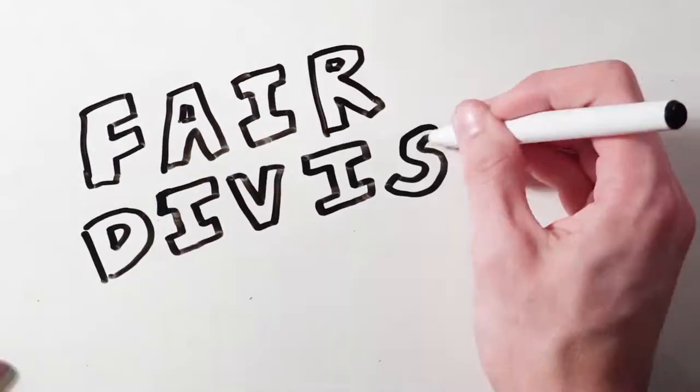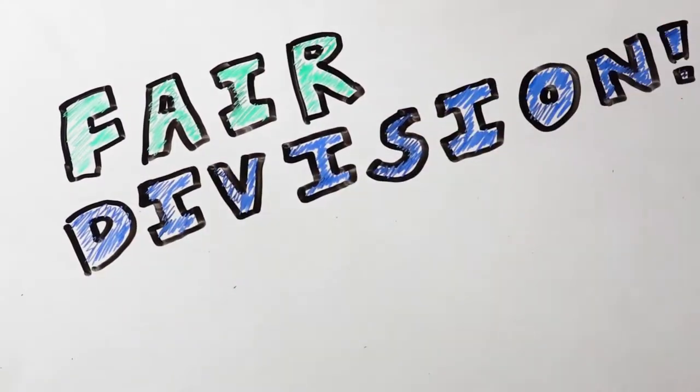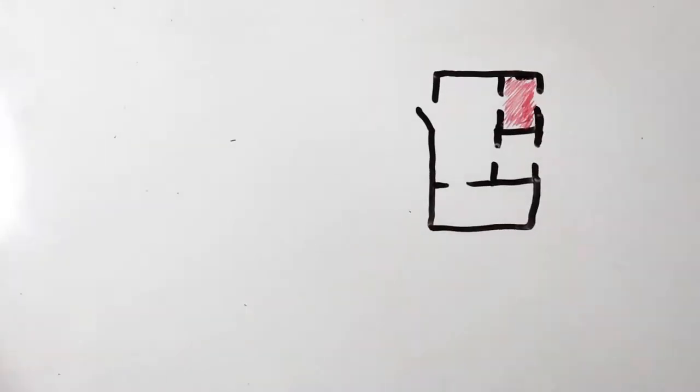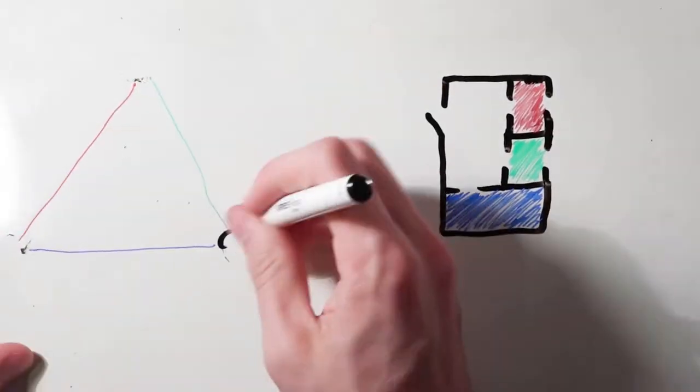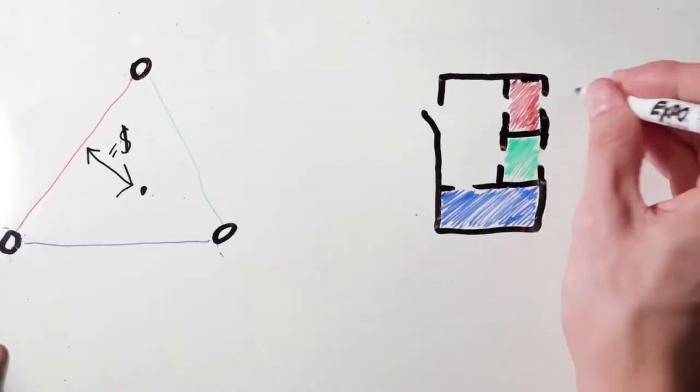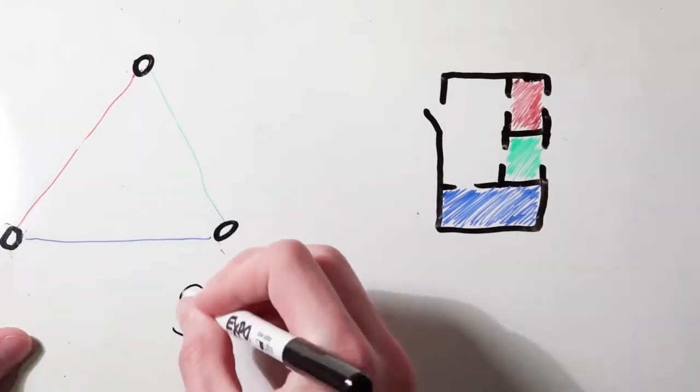This is a fair division problem, and there's a simple theorem in combinatorics that can help us solve it. First, we'll draw a triangle and mark each edge to represent a certain room. For a point in the middle, the distance to any edge relates to the price of the corresponding room, adding up to the total rent.